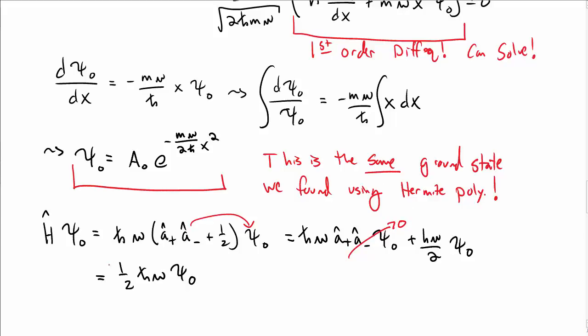But A⁻ψ₀ is just zero because ψ₀ is the ground state. I can't lower it anymore. So I just get one half ℏω times ψ₀ back again, which tells me that the ground state energy is one half ℏω.